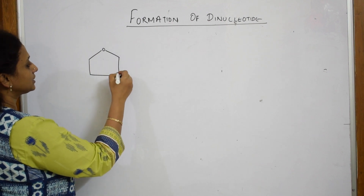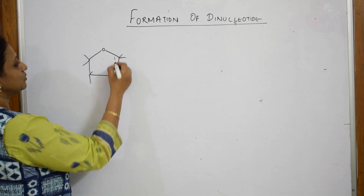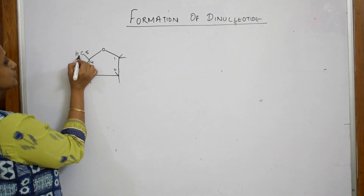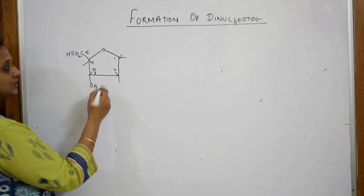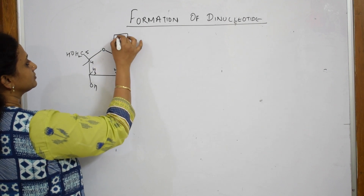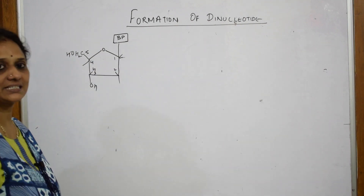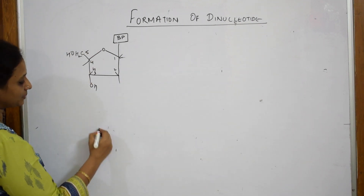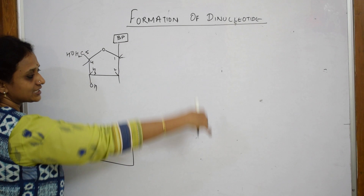Start by drawing a pentose sugar — number the carbons: one, two, three, four, and five. At the fifth carbon you have CH2OH, and at the third carbon you have H and OH. Here it is linked with a base pair — suppose adenine and thymine as one base pair. Pick up one more pentose sugar to show the formation of two nucleotides linked by a phosphodiester bond.